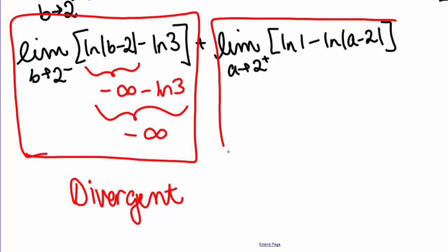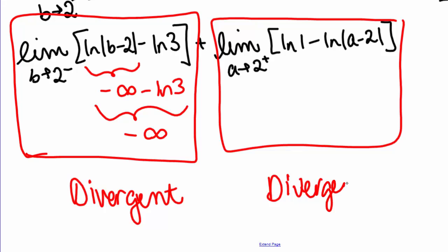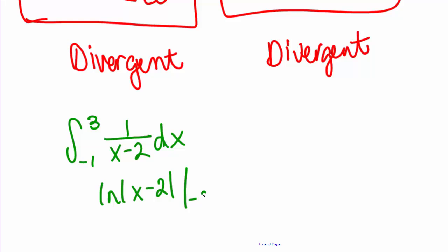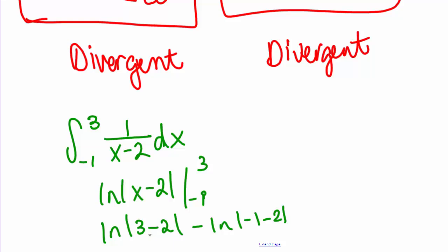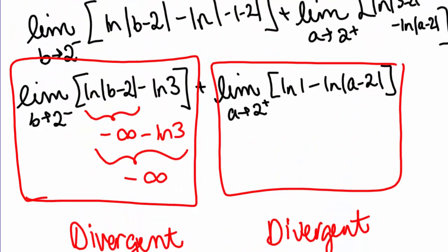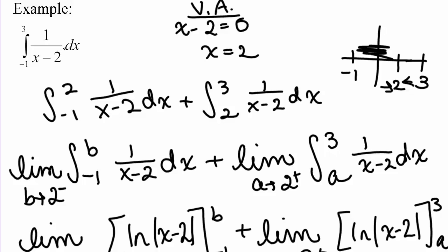A similar argument shows the second limit also diverges. But just as with the sine example, once one limit is divergent, your final answer is divergent. One important warning: if we hadn't noticed this was improper and had just integrated from negative 1 to 3 directly, we would have computed natural log of |x minus 2| from negative 1 to 3 and gotten a seemingly valid answer — but we would have been wrong. So from now on, whenever you're given an integral, it's really important to check whether it is improper.